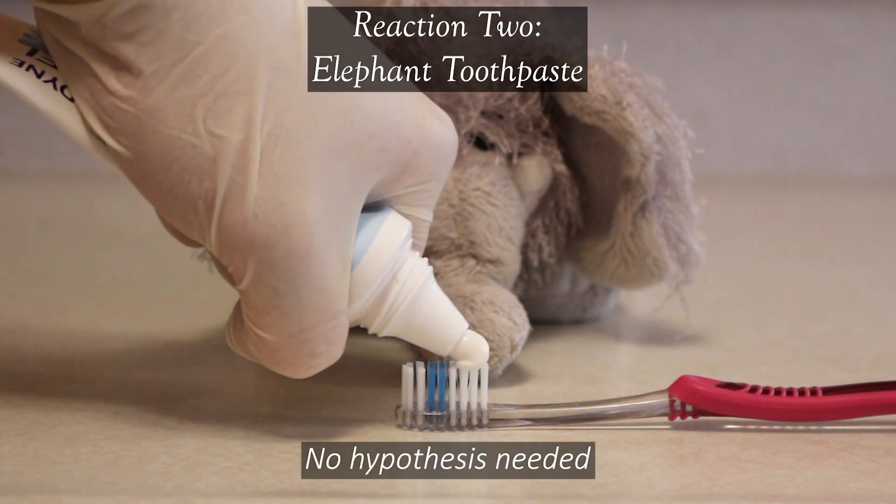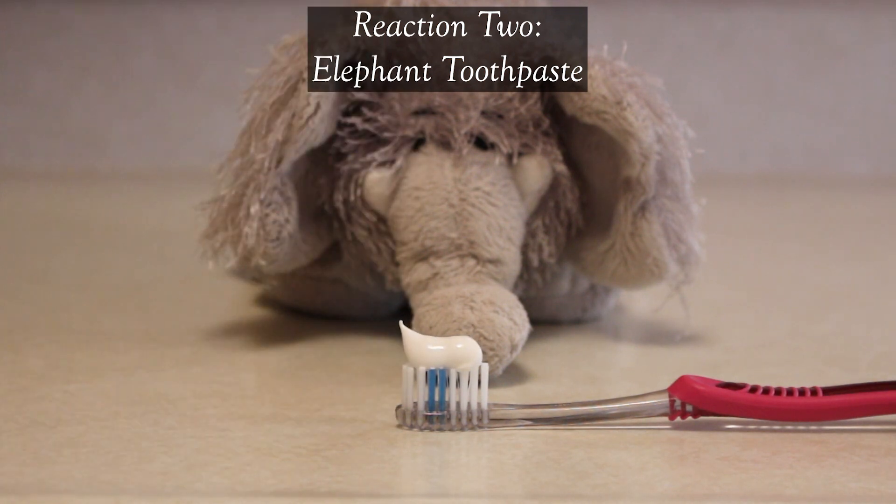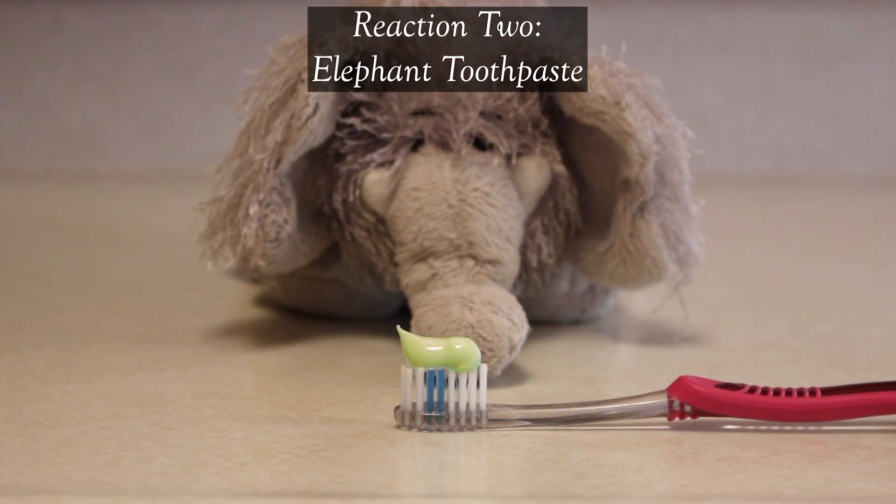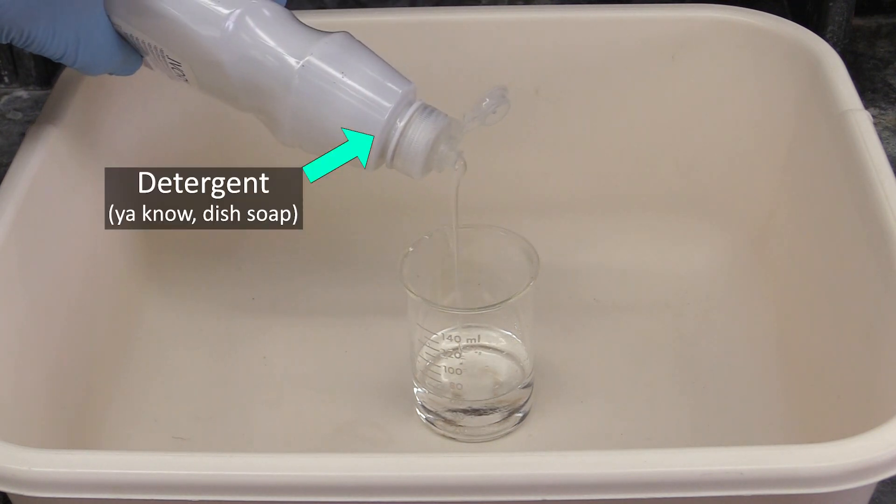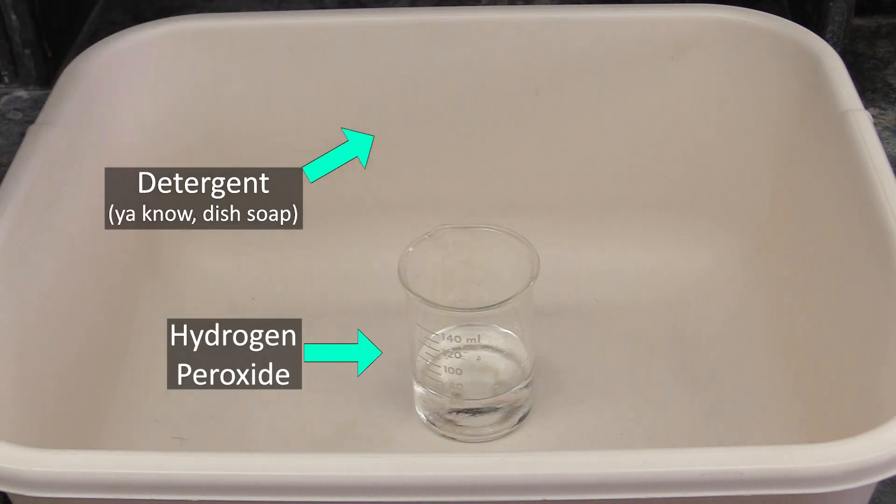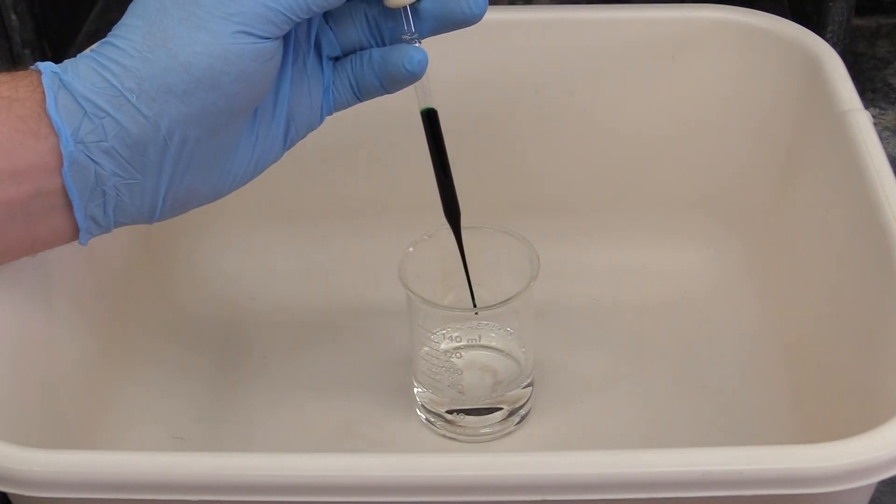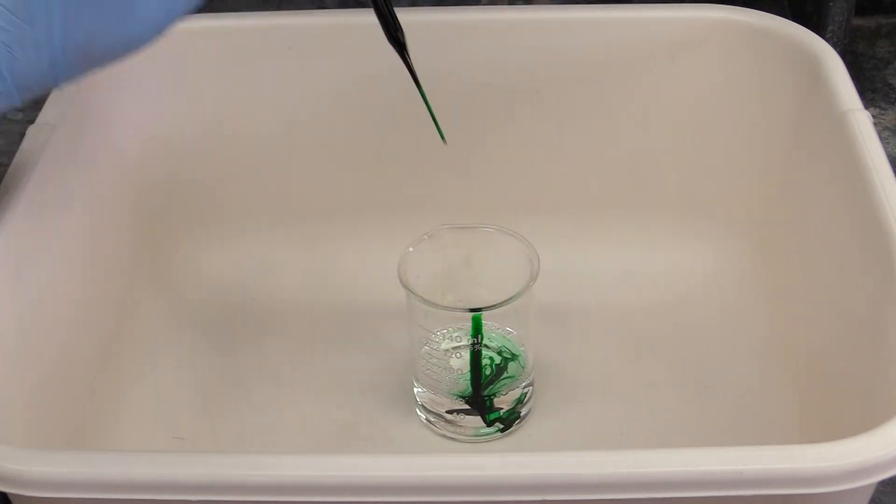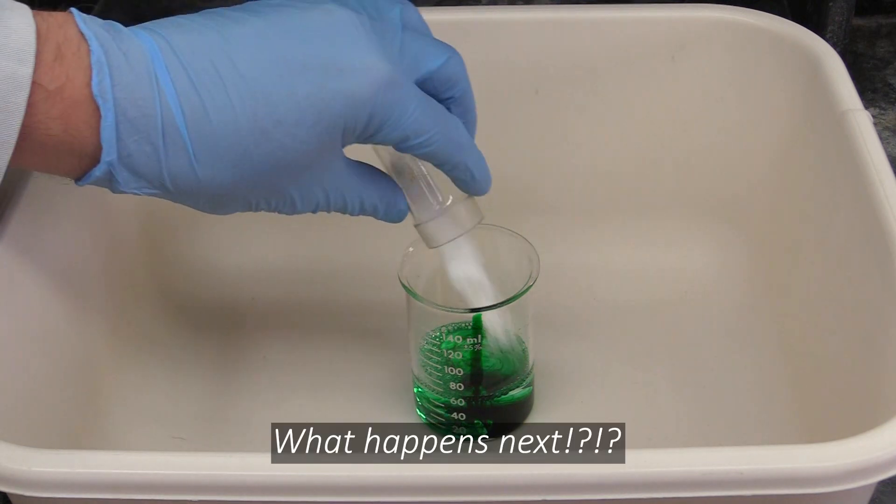There's no hypothesis to form for this one, it's mostly an observational exercise. It will give you a chance to be a little creative with the toothpaste's color, so that's neat. To make the toothpaste, you'll mix some detergent into a solution of hydrogen peroxide. Add a little food coloring if you want, then add a small scoop of sodium or potassium iodide, and stand back and observe.